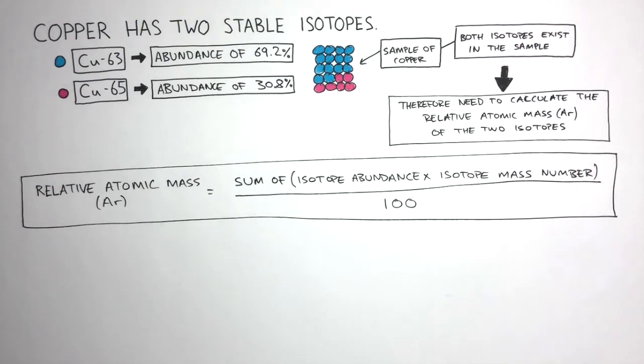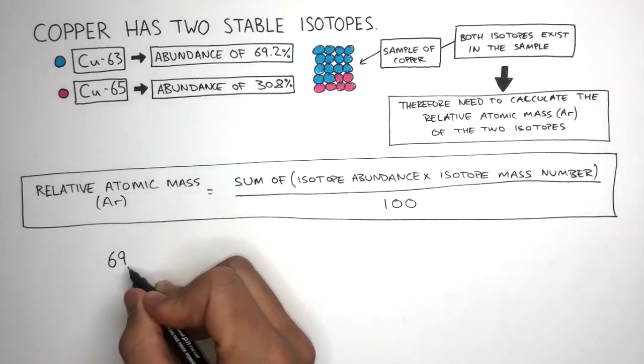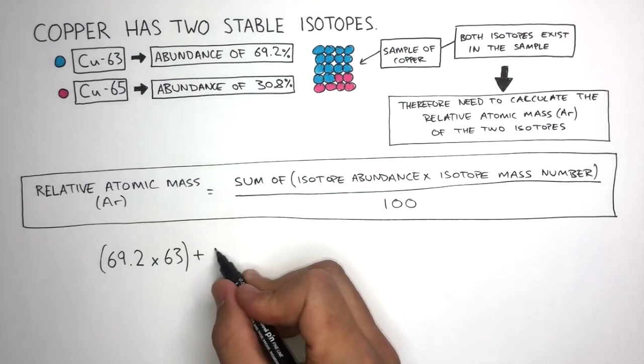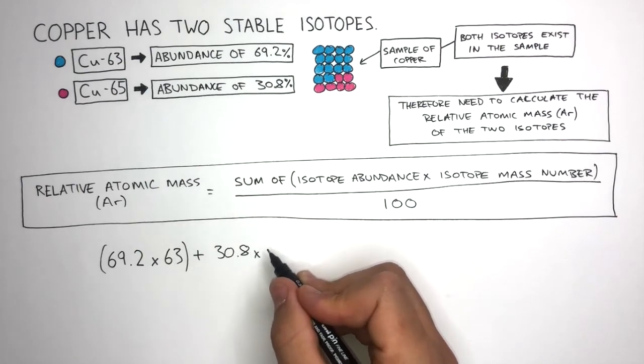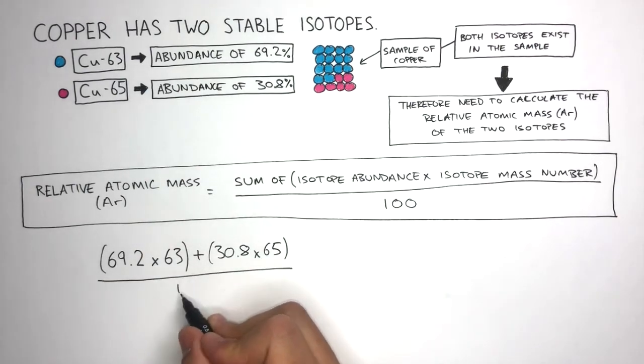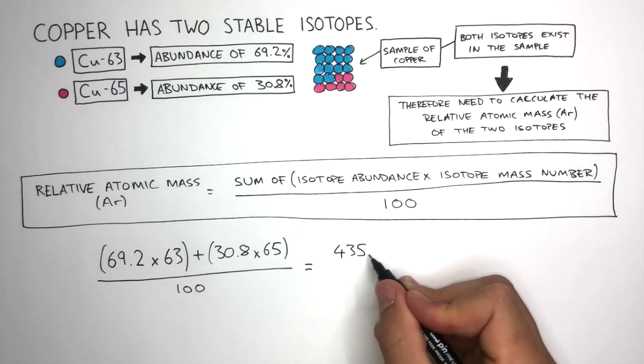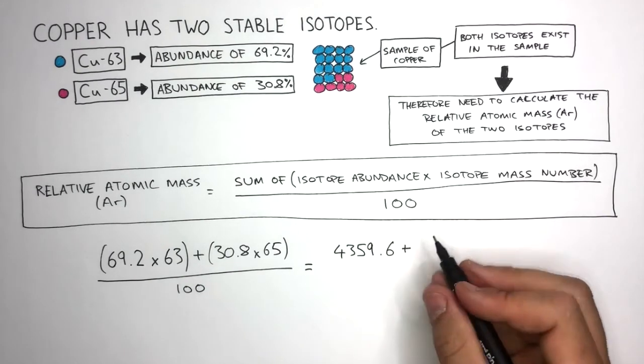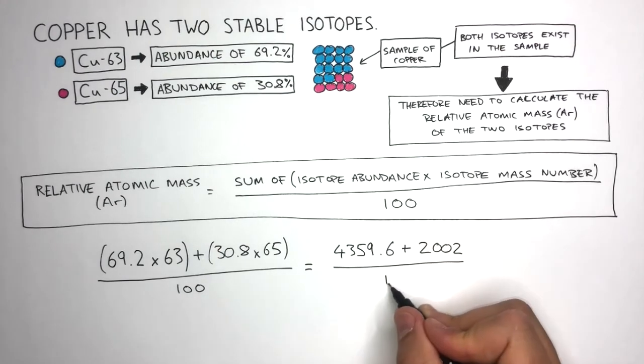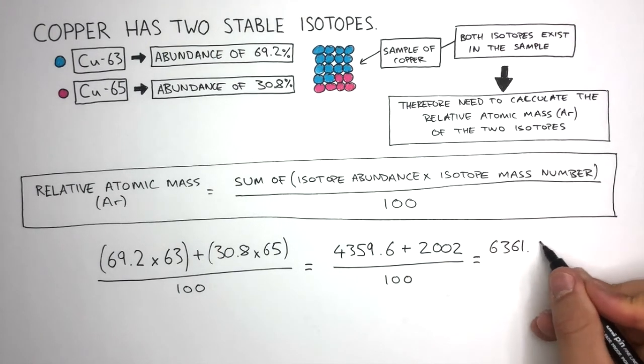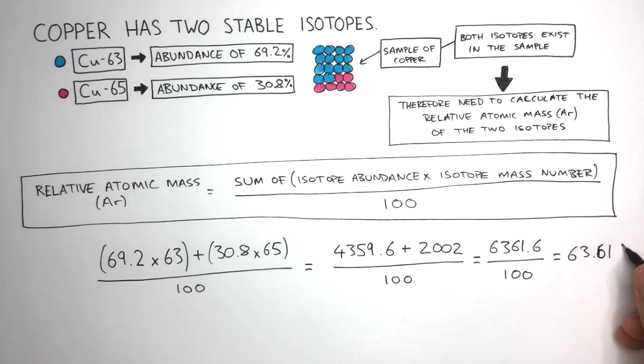We're now going to use the data above to calculate the relative atomic mass of copper. 69.2 multiplied by 63 plus 30.8 times 65 divided by 100. To make things clearer, this is 4359.6 plus 2002 divided by 100. This is 6361.6 divided by 100. This equals 63.616.